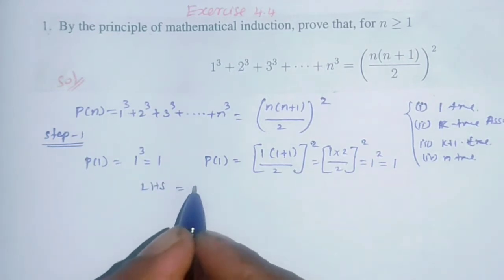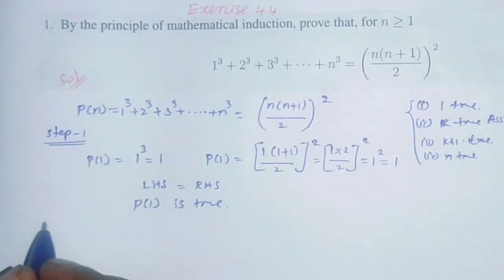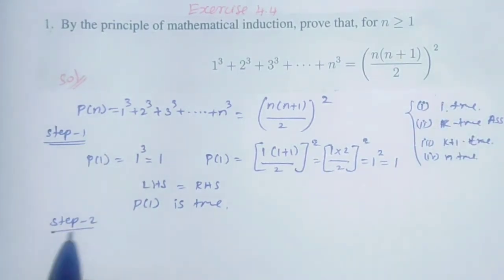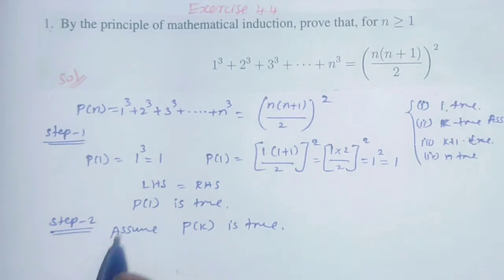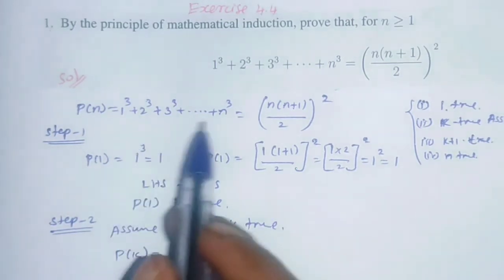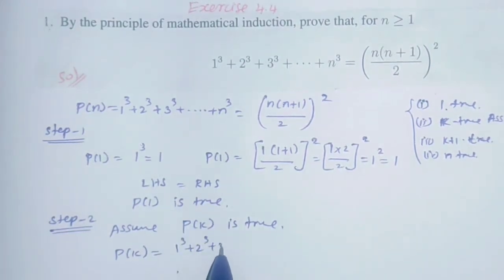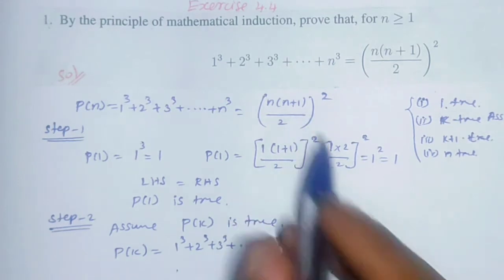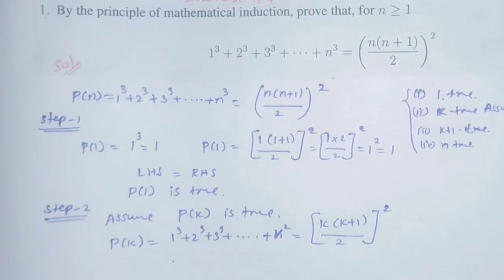Step 2: We assume P(k) is true. Assume P(k) is true: 1³ + 2³ + 3³ + ... + k³ = [k(k+1)/2]², where we replace n with k in the formula.